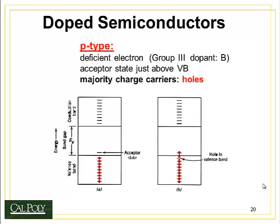A p-type semiconductor is made by a group three dopant such as boron. Group three dopants have only three electrons in their valence shell, so they're deficient in one electron. The effect of this is to create something called the acceptor state, just above the valence band inside the band gap. An electron can jump from the valence band into the acceptor state, leaving behind a hole in the valence band. This hole now becomes the majority charge carrier. The missing electron or hole actually conducts a positive current in the opposite direction that we would normally see current flowing.